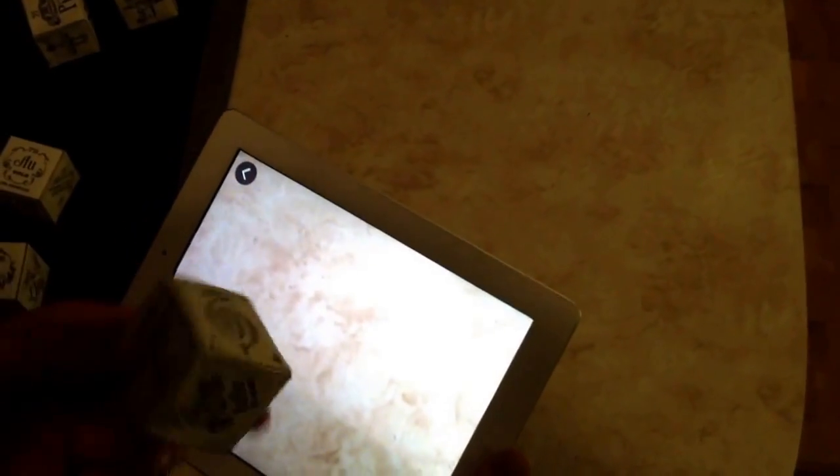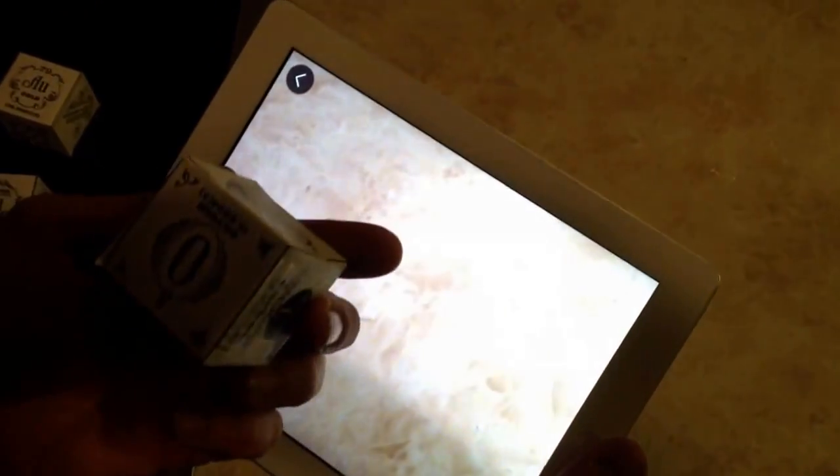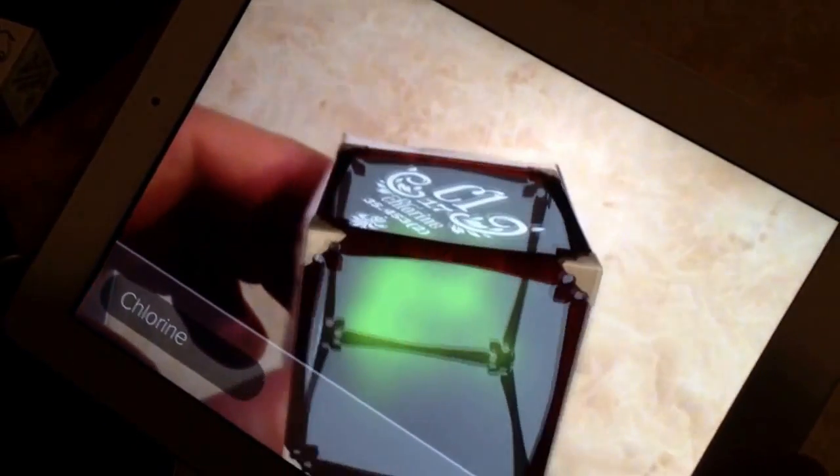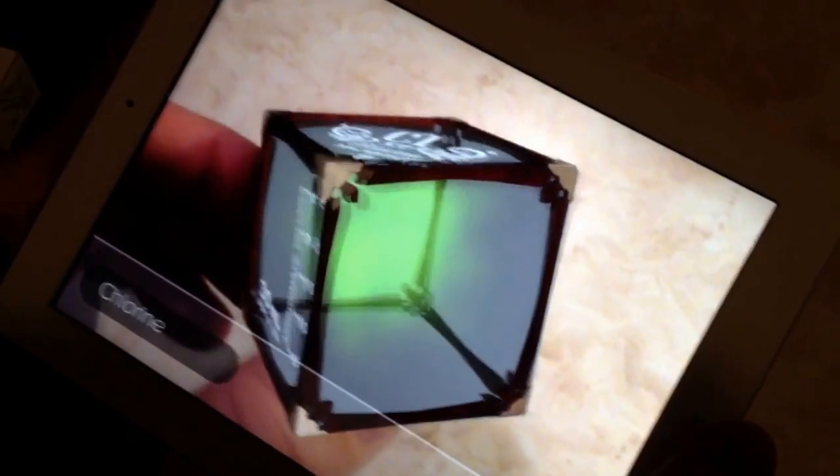What we're going to change here are these paper cubes, and each one of these cubes has a unique element on them. When I put that in the camera, in this case chlorine, you can actually see it gives you a view of what is supposed to be chlorine gas.